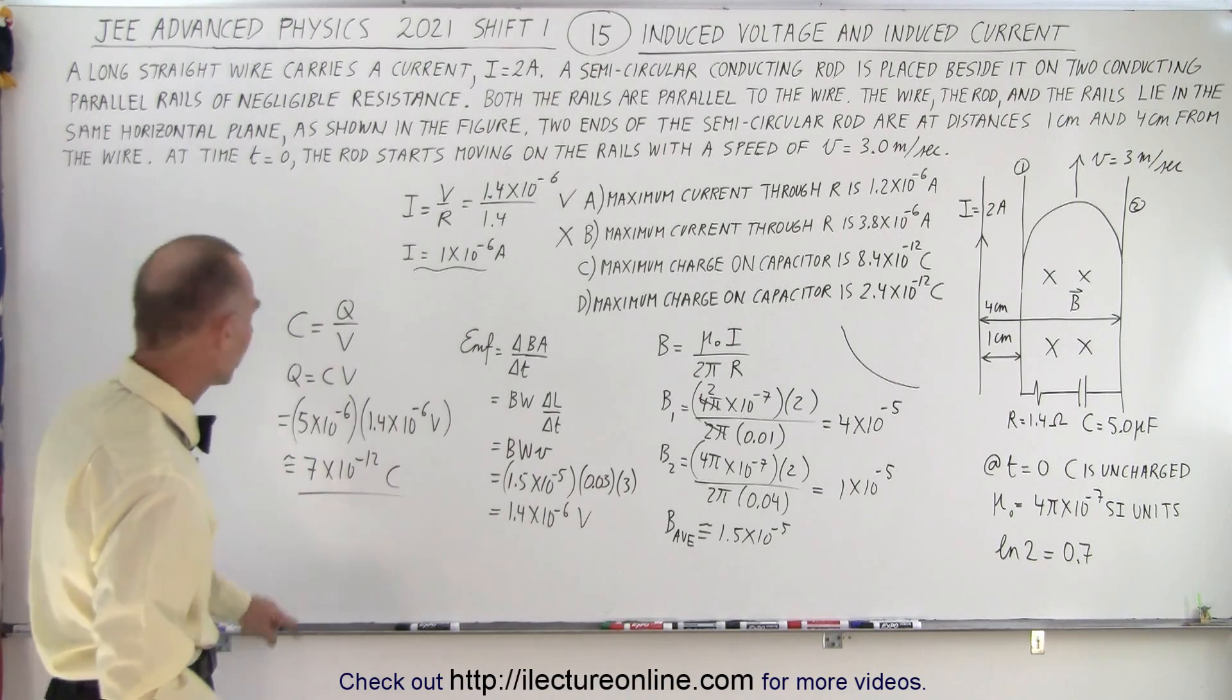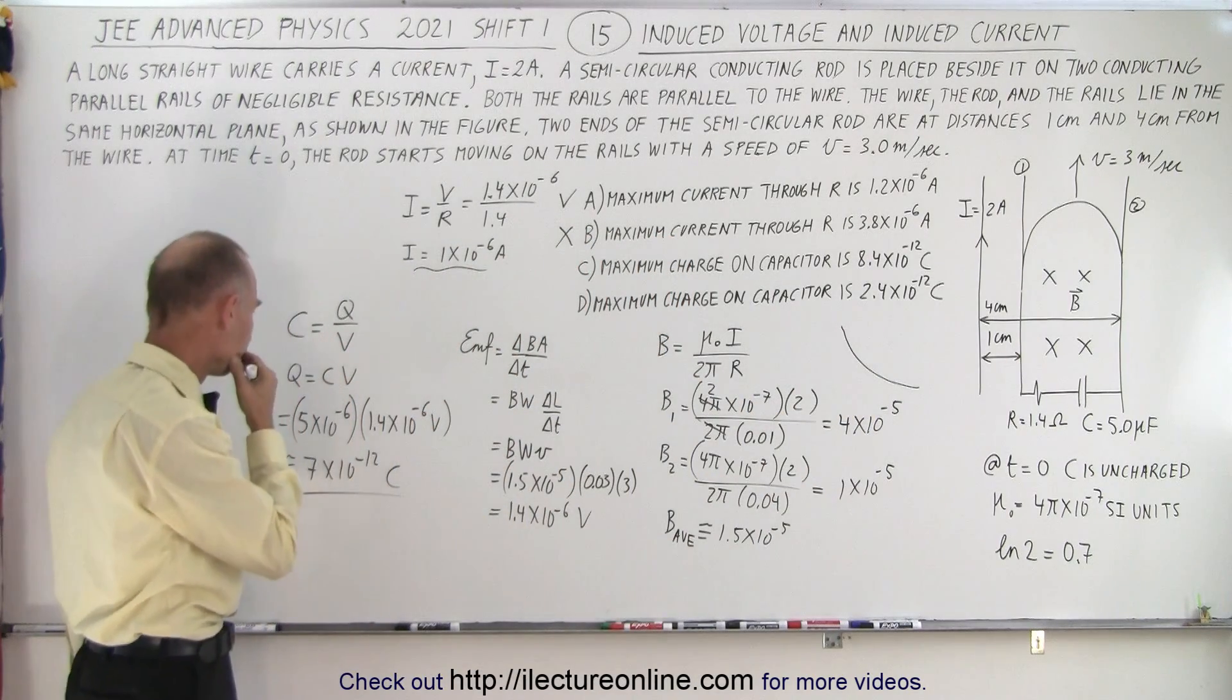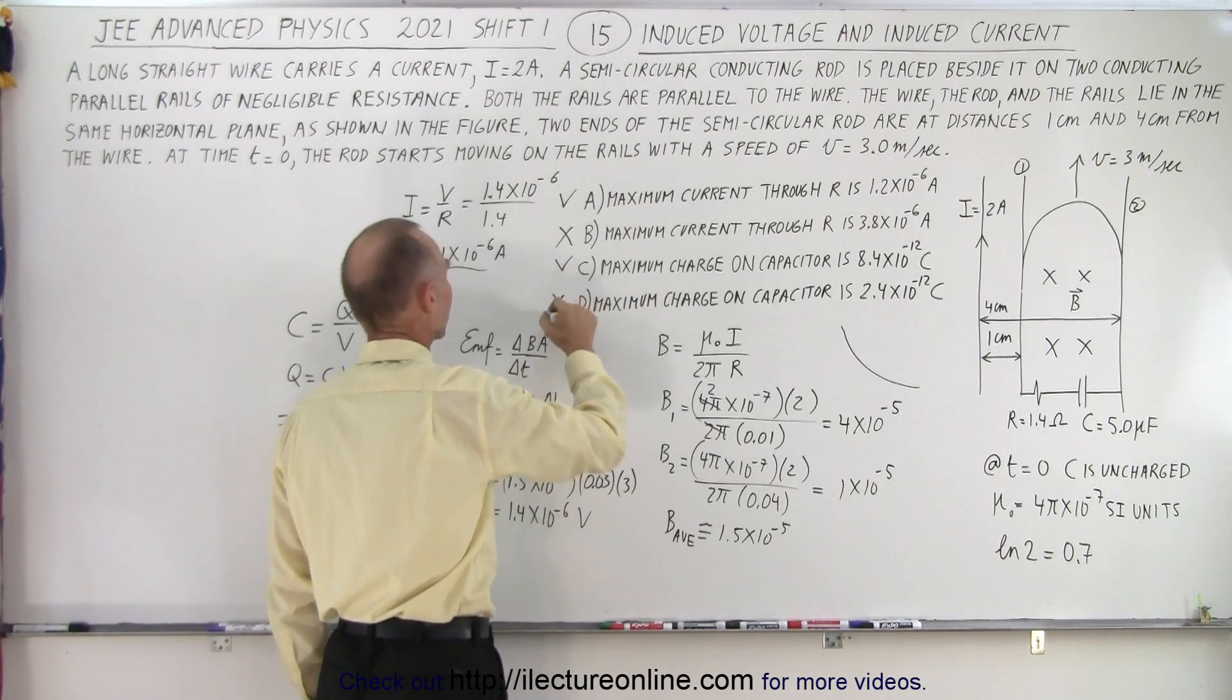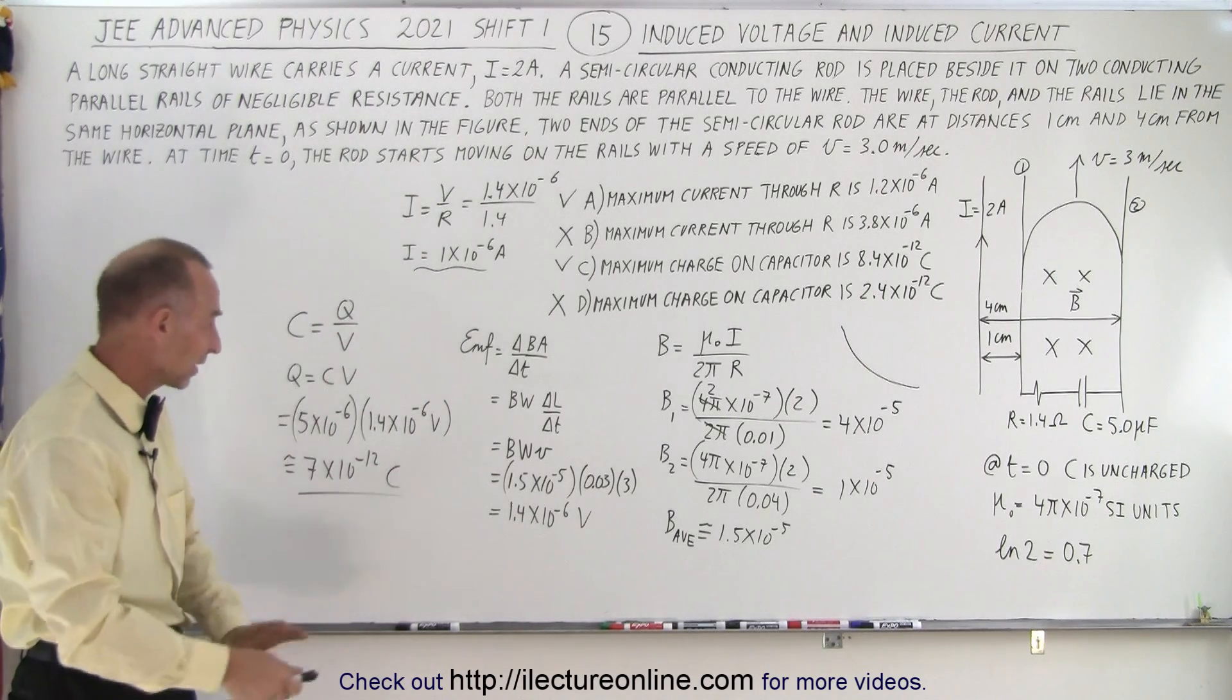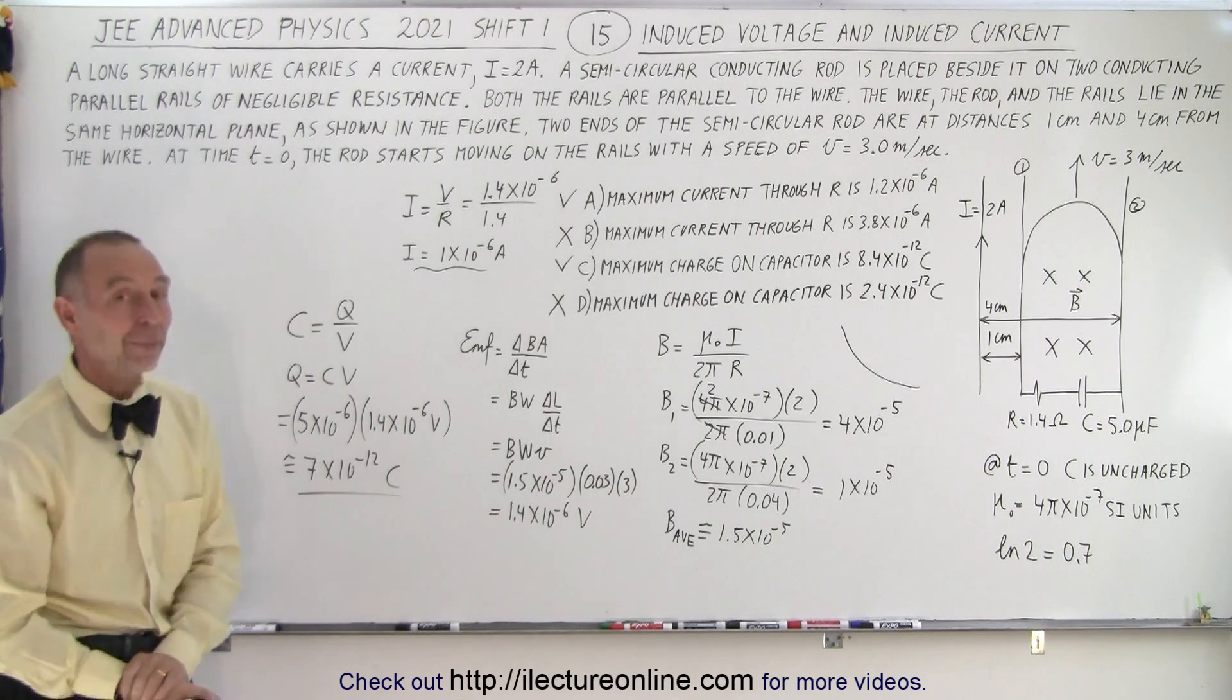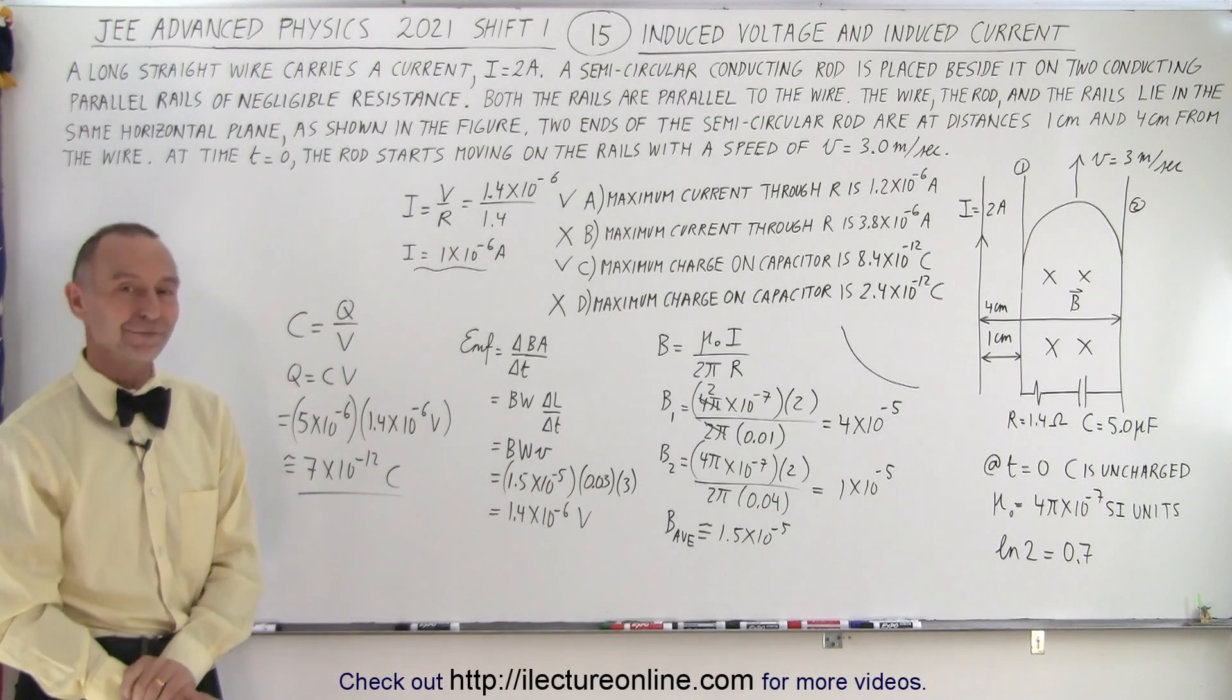And notice here we have one answer that's 8.4, the other answer that's 2.4. So it looks like 8.4 is the closest to what I've got and I'm going to say c is correct and d is not. Again no calculator so we need to get some value that's relatively close to that and yes we're probably good with calling a and c the correct answers and b and d the wrong answers and that is how it's done.